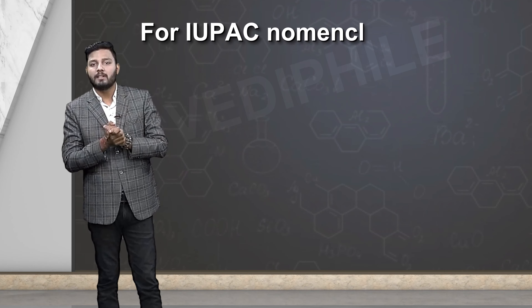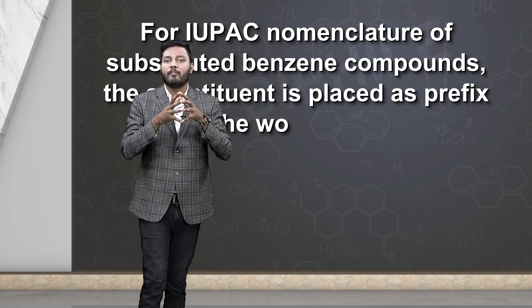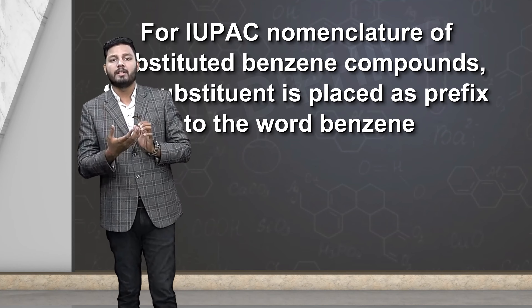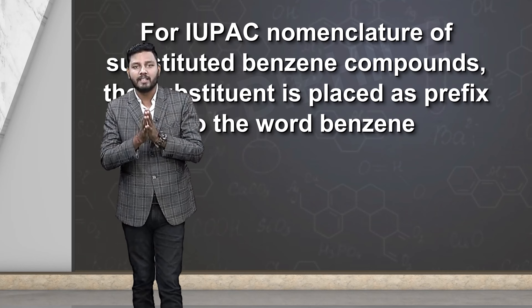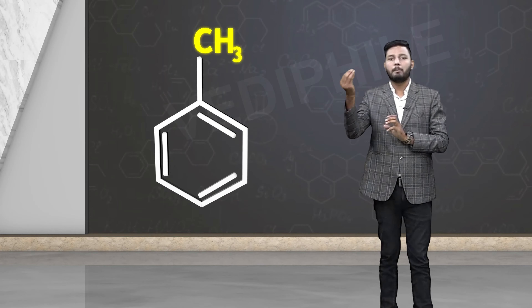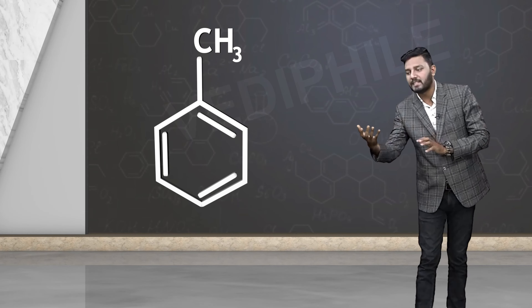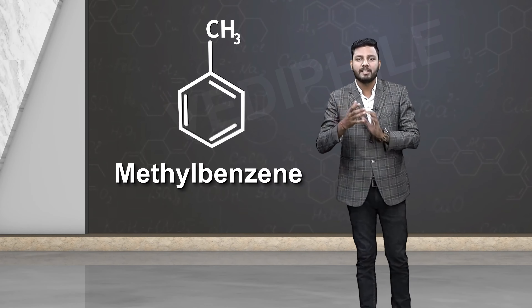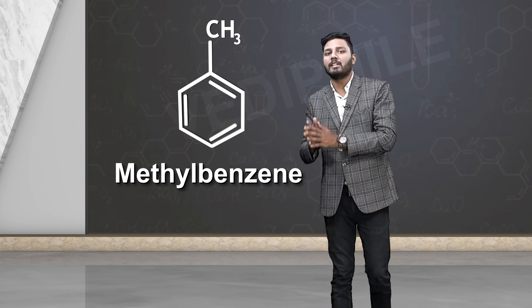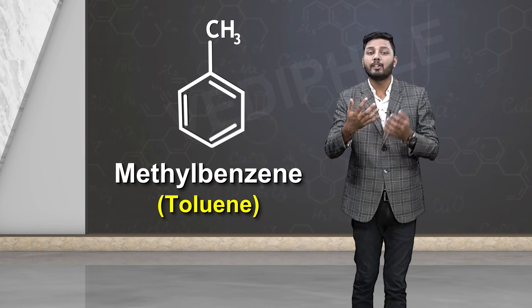For IUPAC nomenclature of substituted benzene compounds, the substituent is placed as a prefix to the word benzene. For example, if a benzene ring has a methyl group attached to it, we write the substituent as a prefix before benzene, giving the name methylbenzene. Methylbenzene is also called toluene — toluene is the common name, and methylbenzene is the IUPAC name.